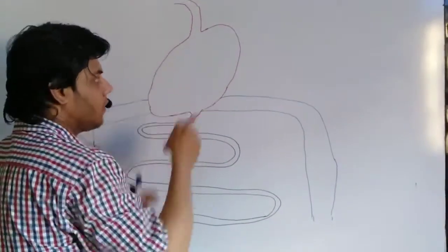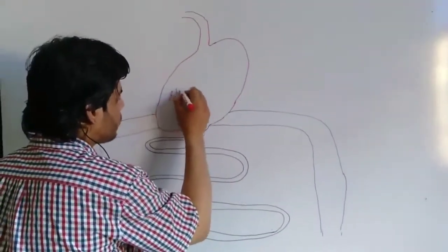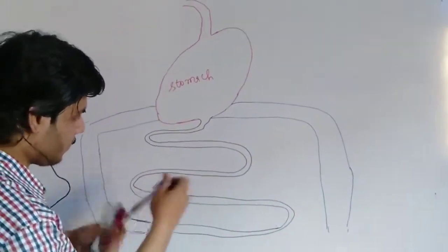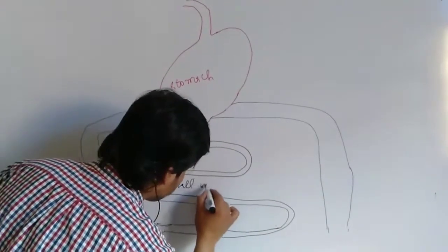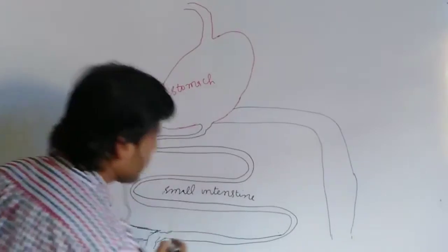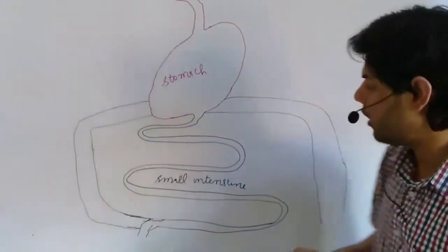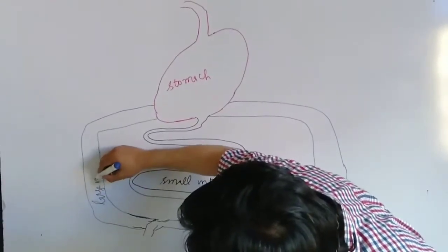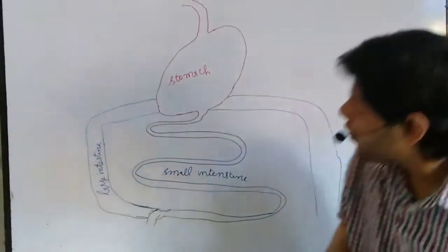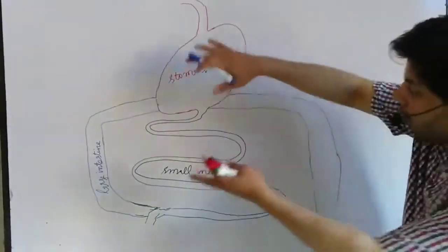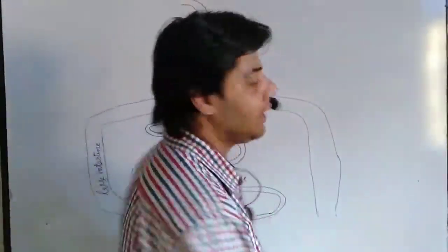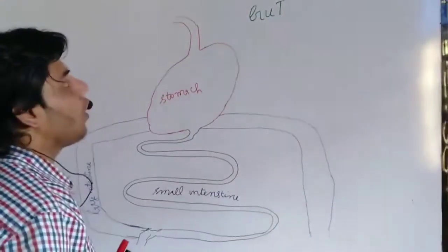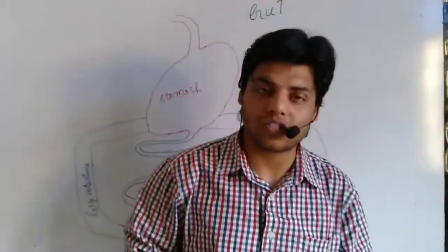To explain GALT, let me draw the gastrointestinal tract of the human body. So let's say this is the stomach. Now this is the small intestine, and this one we call the large intestine. The whole system is called the gut, or gastrointestinal tract.